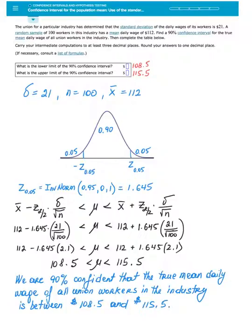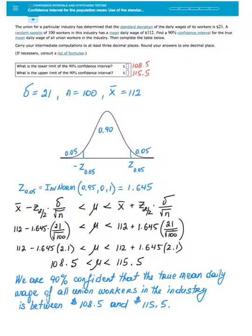With 90% in the center, there must be the remaining 10% divided equally between the two tails. So there is 5% in the left tail and 5% in the right tail. Z sub 0.05 can be found by applying inverse norm to the total area to the left of Z sub 0.05, which is 95%, with mean 0 and standard deviation 1 because we work with the standard normal curve and Z scores. This number comes out to be 1.645.